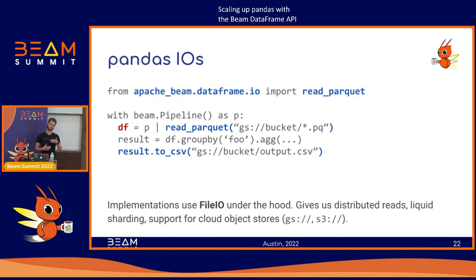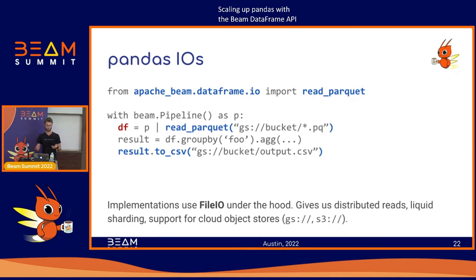On the output side you can use the conventional Pandas to_csv or to_parquet to write output data to cloud storage. Under the hood this uses file IO, which gives us the ability to read from cloud storage with distributed reading and dynamic sharding support. It also uses the actual Pandas read_csv implementation, which has had a lot of development work put into optimizing CSV reading.